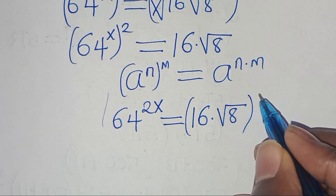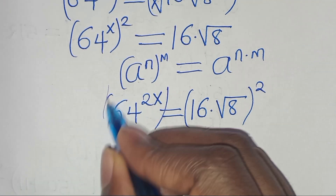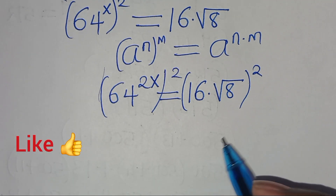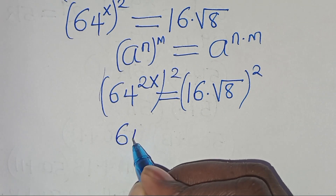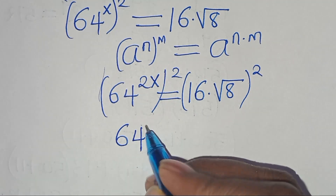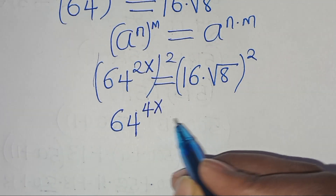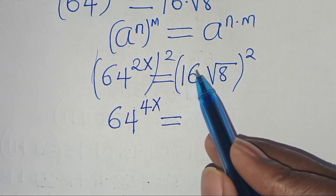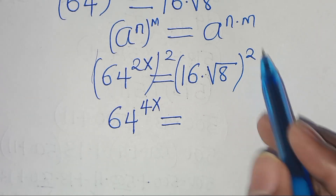The next step is to square again both sides, and this implies that now here we have 64 raised to the power of — this is 2x times 2, so this becomes 4x — this is equal to 16 times square root of 8, raised to the power of 2.